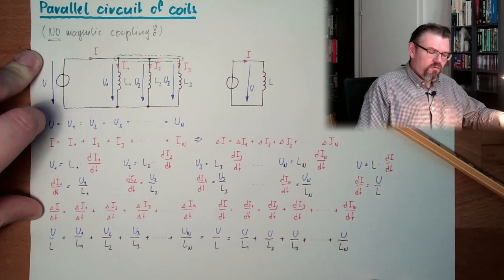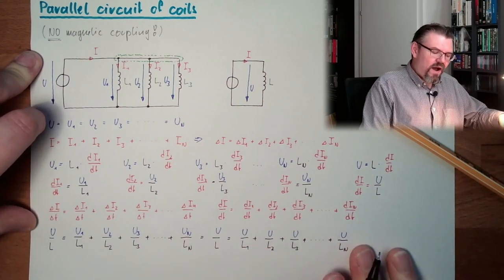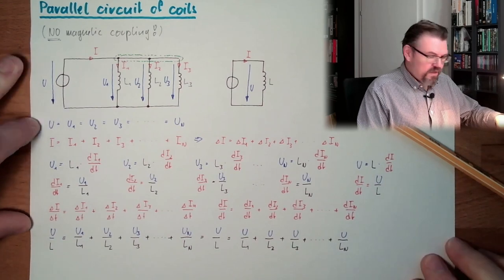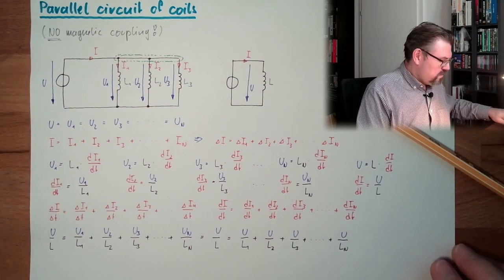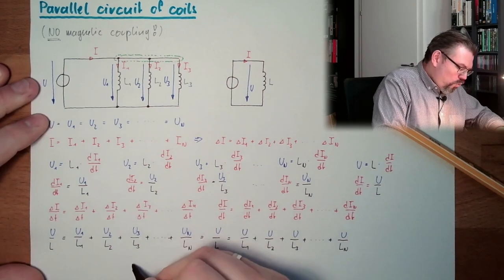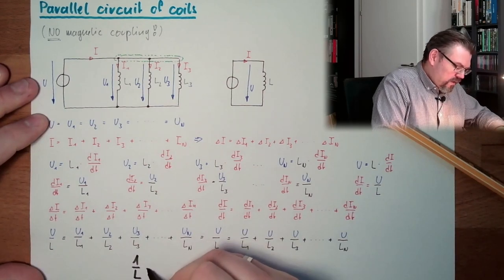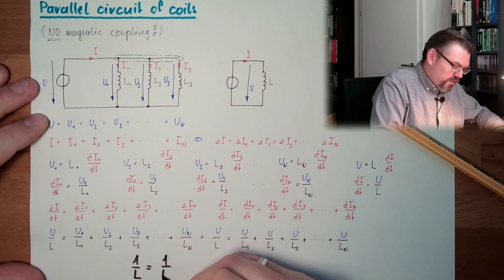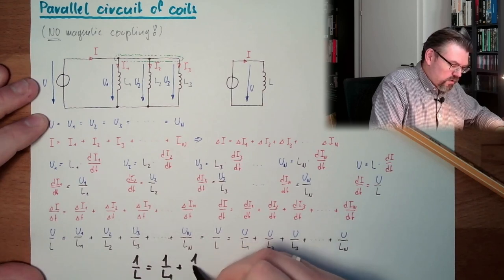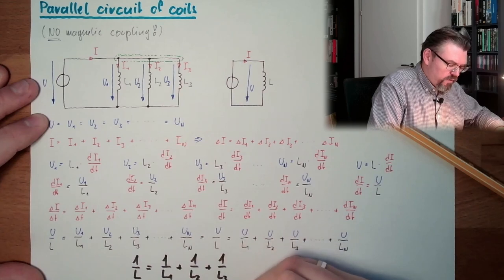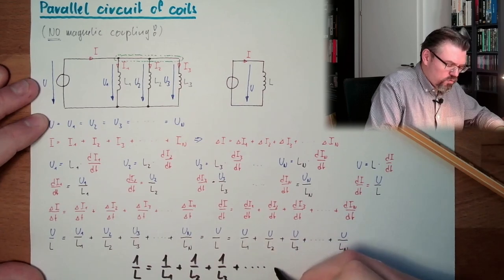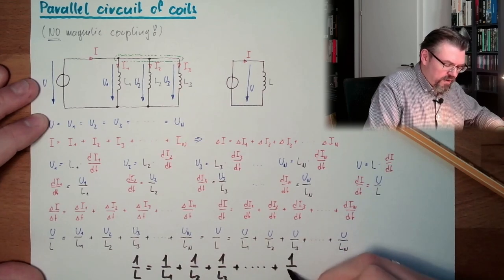And now, I only have to divide by U. And what is left, actually, is 1 divided by L equals 1 divided by L1 plus 1 divided by L2 plus 1 divided by L3 plus, and so on, plus 1 divided by LN.